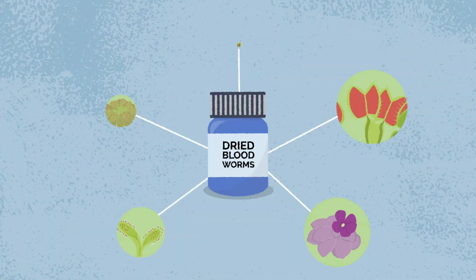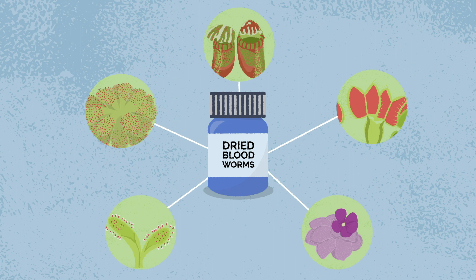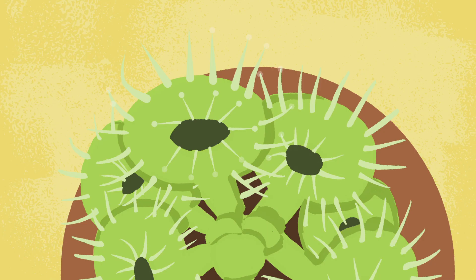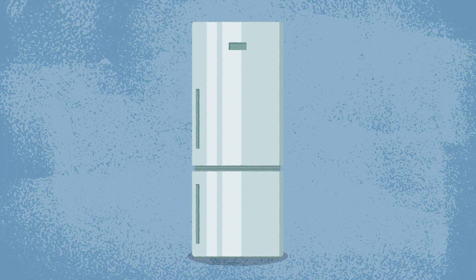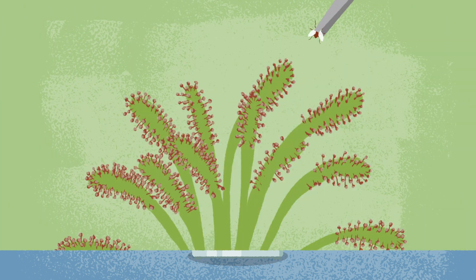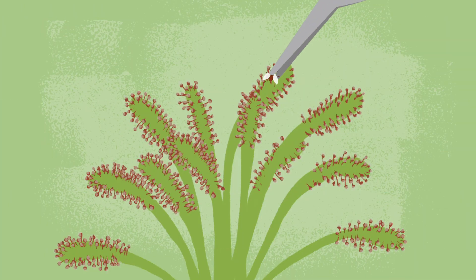Almost all carnivorous plants can be fed with dried bloodworms. Place a small amount of rehydrated worms on a drosera leaf. Some species will curl the leaf over the worms. No stimulation is needed. Another great way to feed your carnivorous plants at home is by refrigerating house flies and similarly sized bugs. The refrigeration process slows them down enough for you to place them in or on your plants.